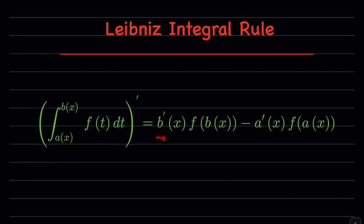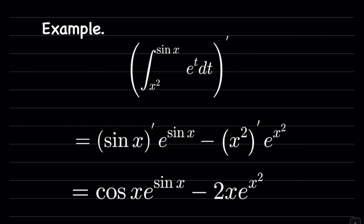It's the derivative of the upper bound, multiplied by the function evaluated at the upper bound, minus the derivative of the lower bound, multiplied by the function evaluated at the lower bound. Let me show you a few examples and this will be more clear.